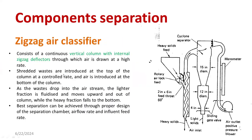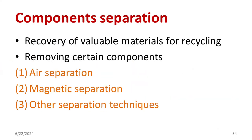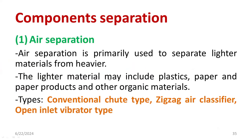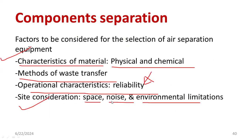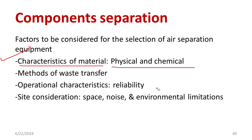In this session I discussed about the first method of component separation called air separation. In that, there are sub-methods: conventional chute type, zigzag air classifier, and the open inlet vibrator. I explained the brief operation of each sub-classification method. If you have any queries please let me know. In the coming session I am going to discuss about the magnetic separator and other methods. Thank you very much for watching this video. Happy learning. Have a great day.